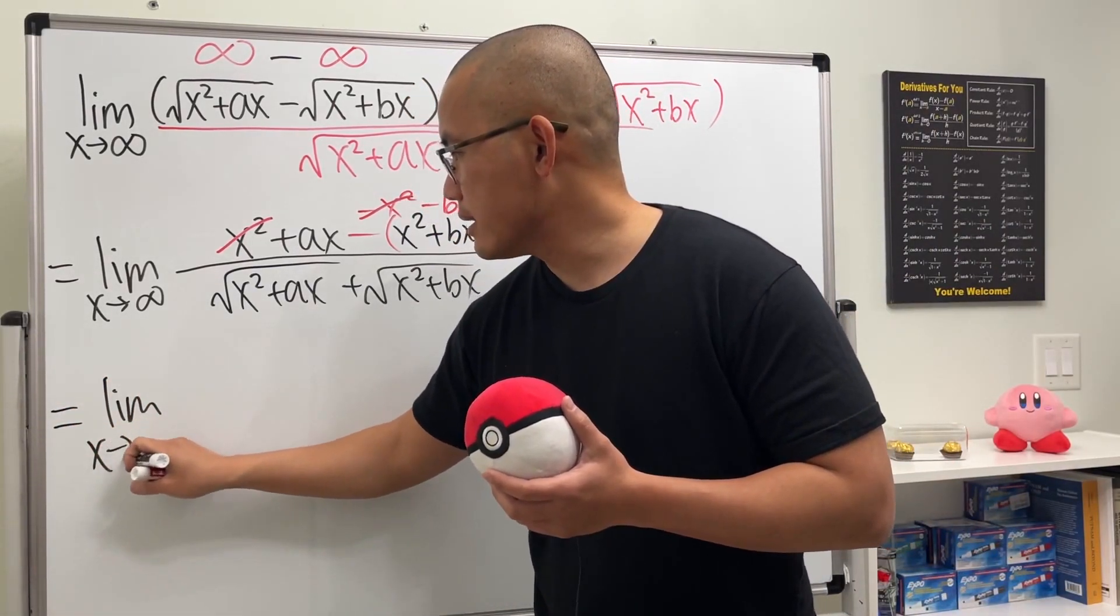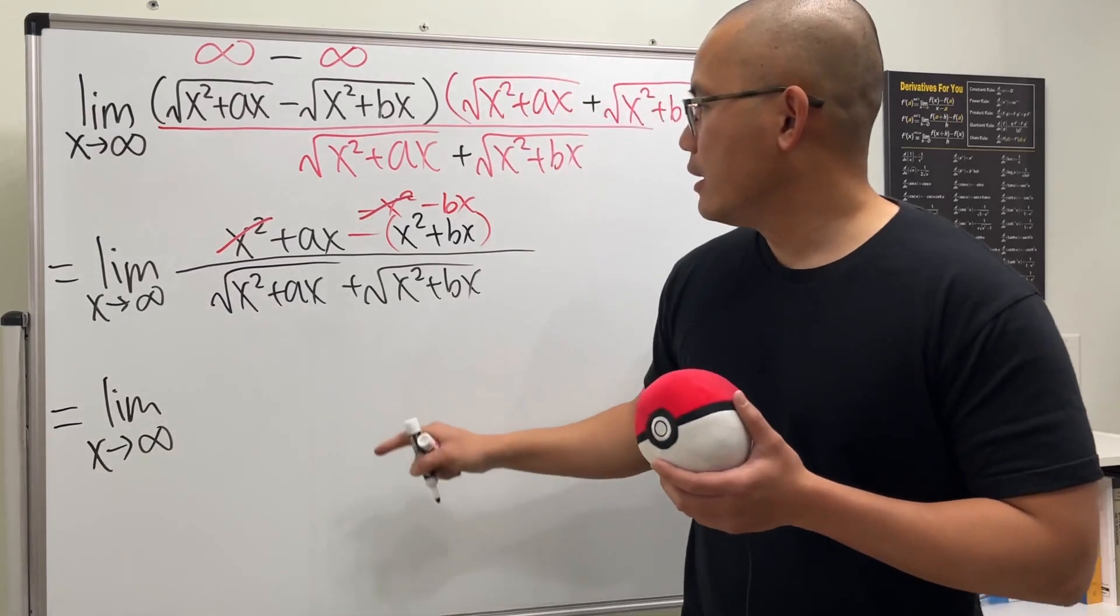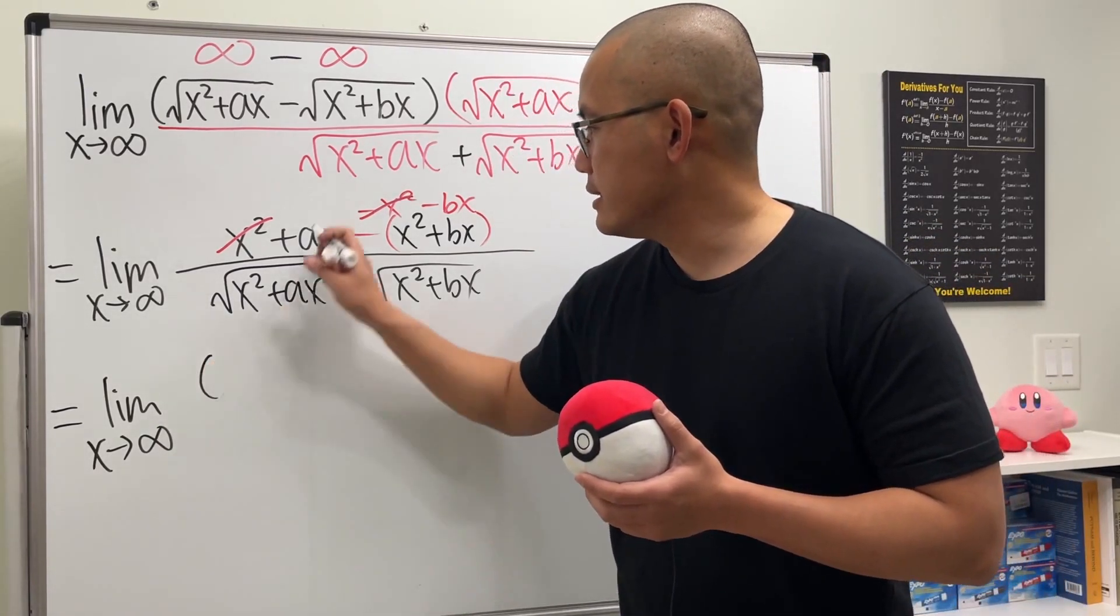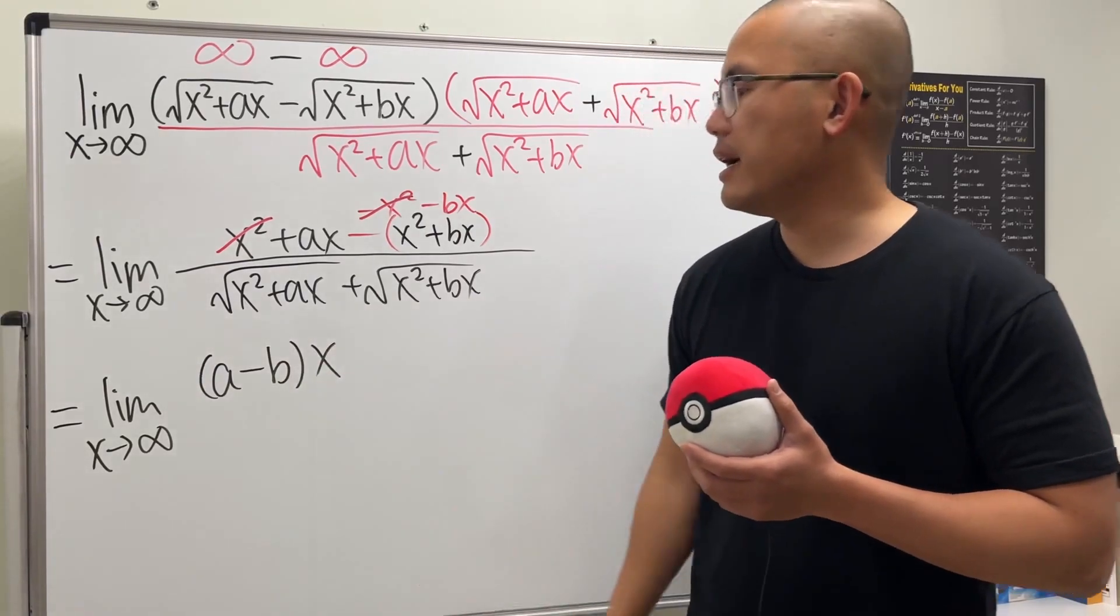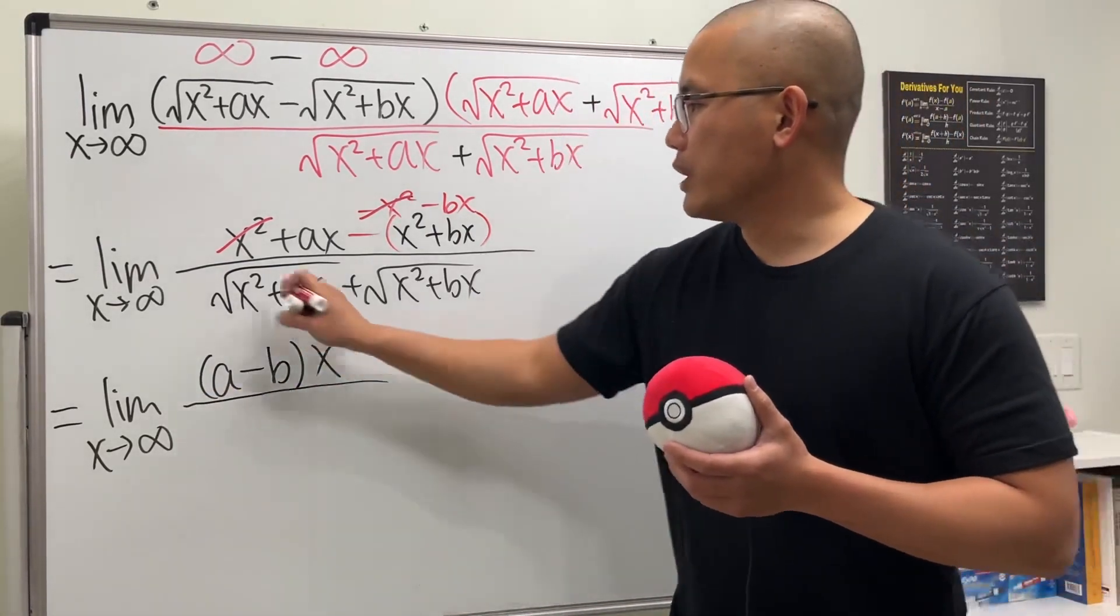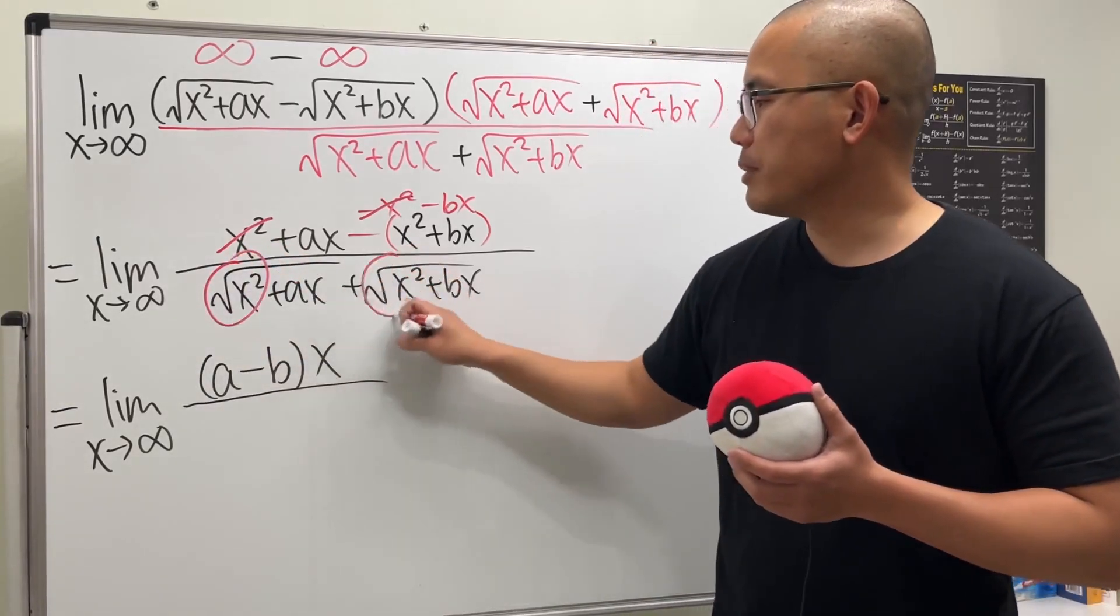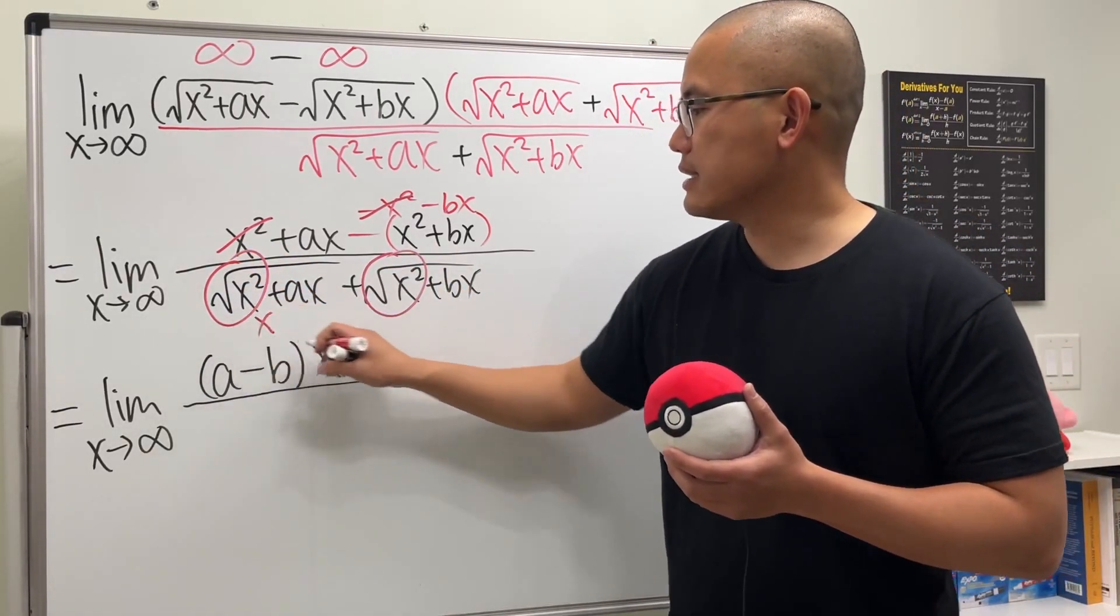So here we have the limit as x approaching infinity, and I will just write it as a minus b, and then we factor out the x. And for the bottom, we care about this and we also care about that—this is going to give us x, and likewise this is also going to give us x.